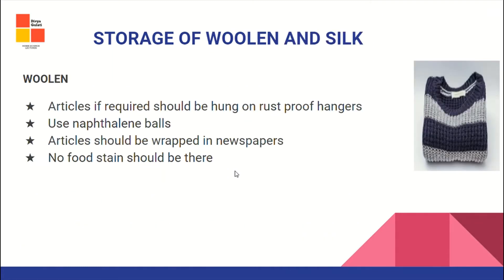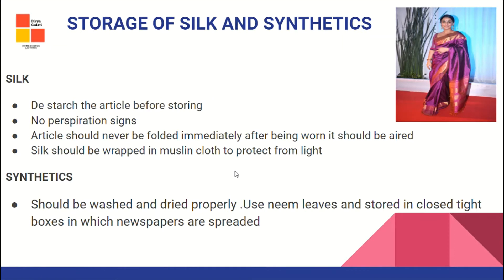For storage of wool and silk — the costly fibers: articles should be hung on rust-proof hangers; use naphthalene balls; woolen articles should be wrapped in newspapers with no food stains. For silk: always de-gum the article before storing; no perspiration signs; the article should never be folded immediately after being worn — it should be aired; silk should be wrapped in muslin cloth to protect it from light, and its folds should be refolded after some time.